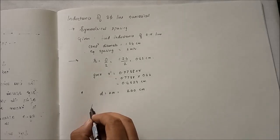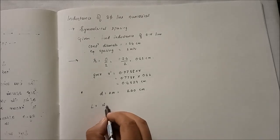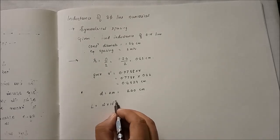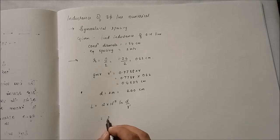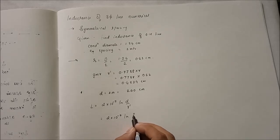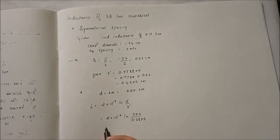Now we will find the inductance. Inductance formula is given as 2 into 10 to the minus 7, ln log D by R prime, which is equal to 200 divided by 0.4829. So after solving this, we get 1.20 into 10 to the minus 6 henry.